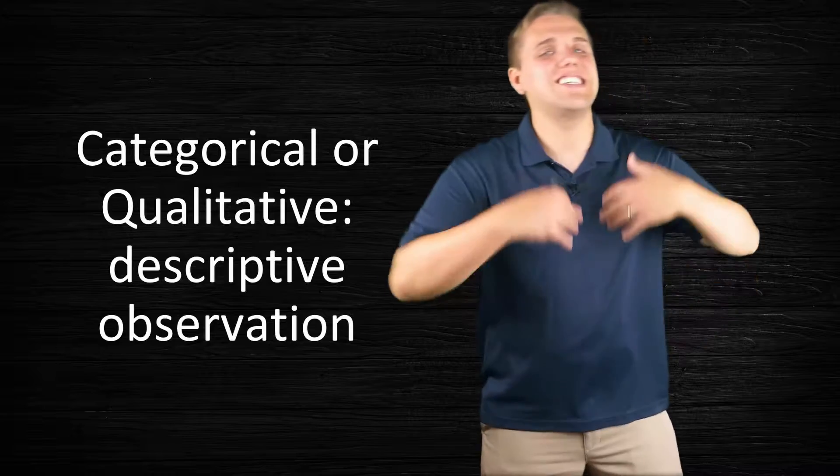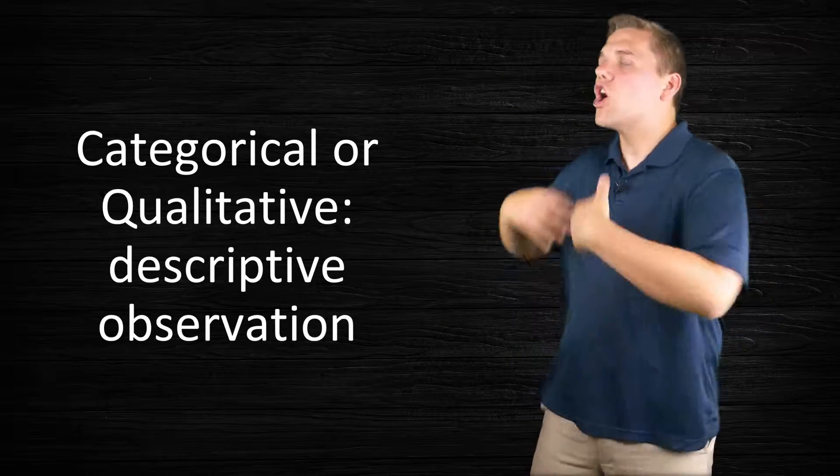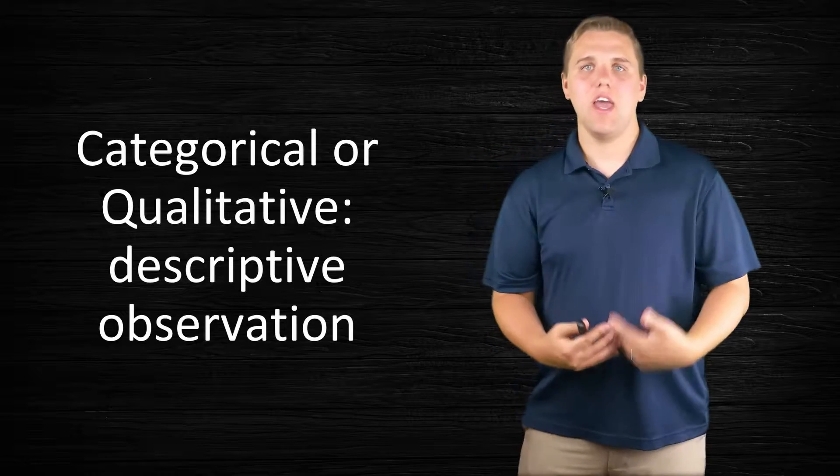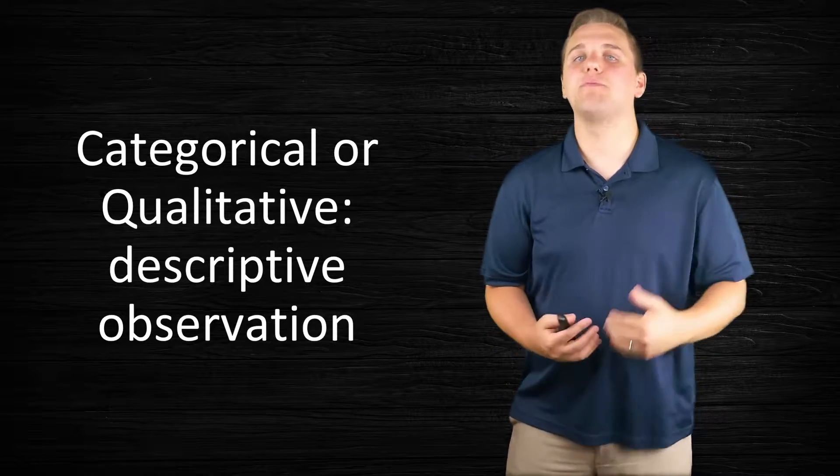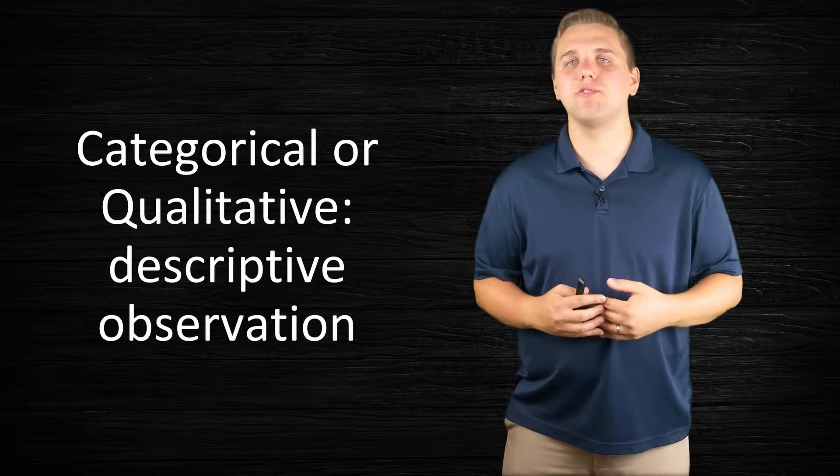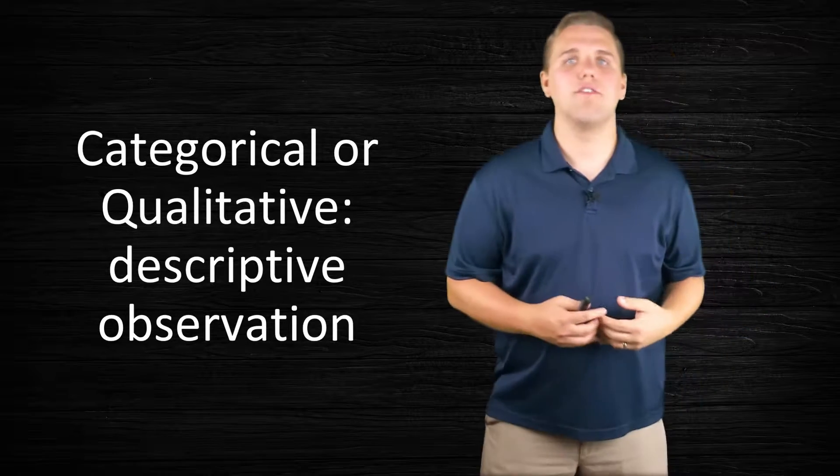The second type of variable is categorical variables, or qualitative variables. These variables are more descriptive in nature—they're descriptive observations. For example, gender—male and female—those are examples of qualitative variables.